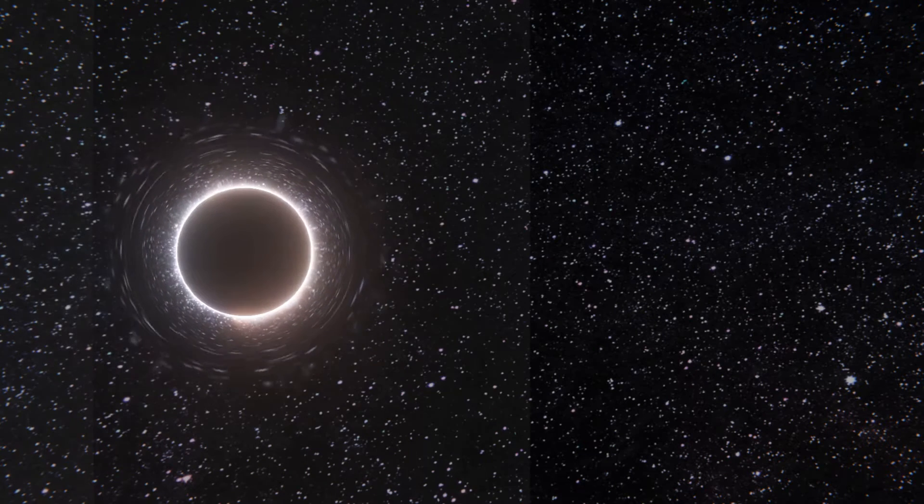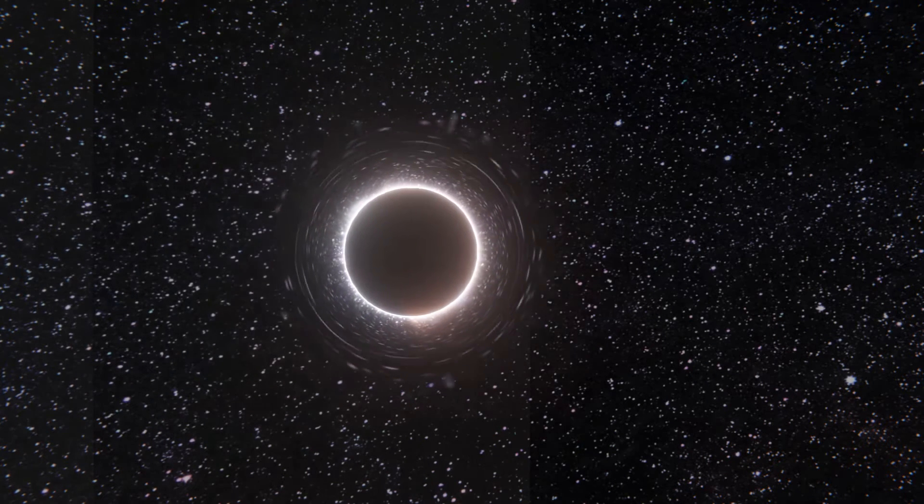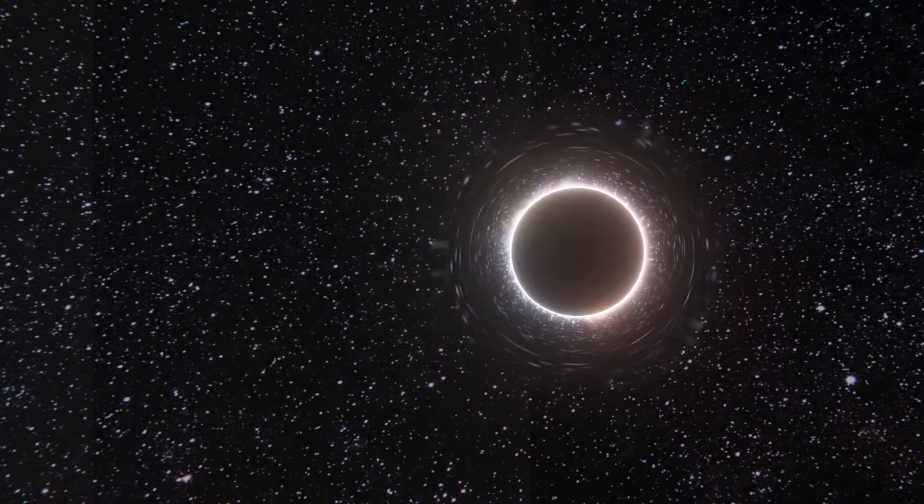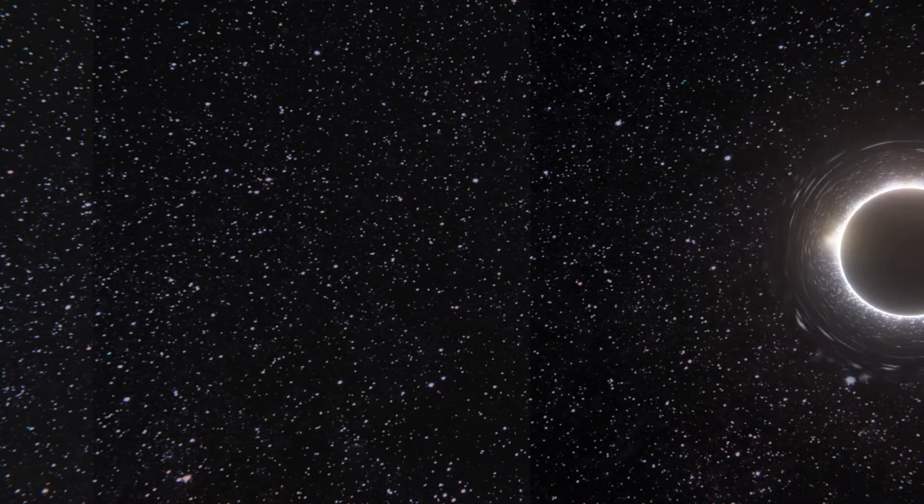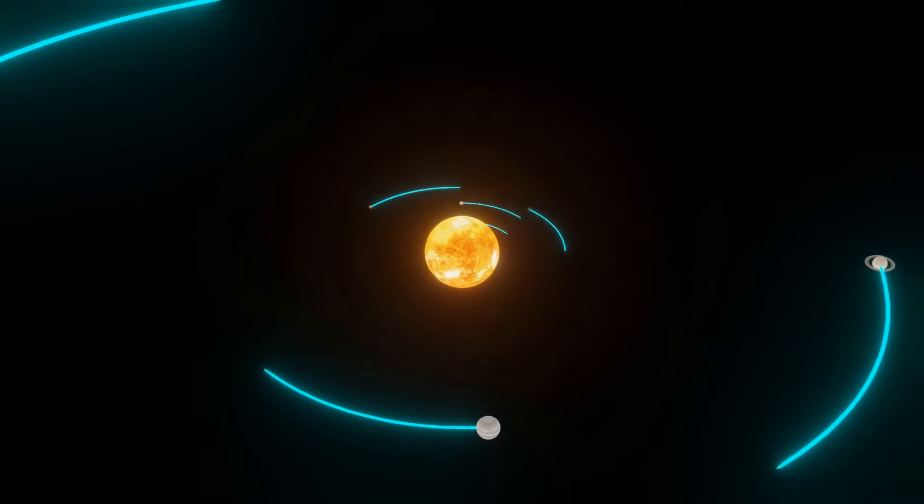To form a black hole, the escape velocity needs to be greater than the speed of light so that not even light can escape, and why a black hole is black.